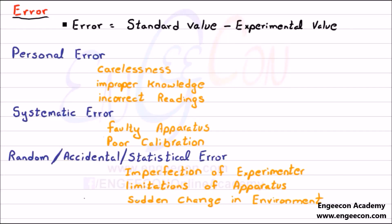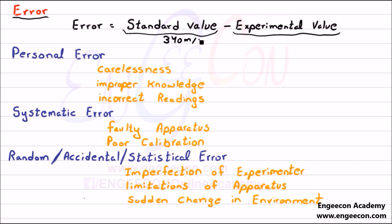What is error? Error is a difference between a standard value and an experimental value. For example, you know that the speed of sound is 340 meters per second. You carried out some experiment and your value is 335 meters per second. So there is an error of 5 meters per second in your experimental value.